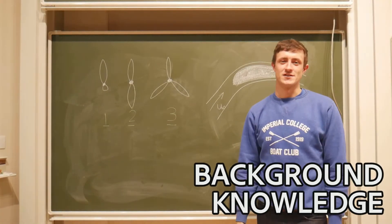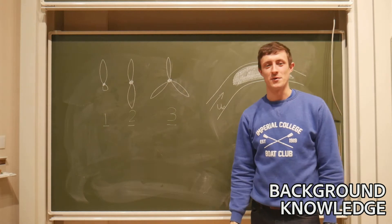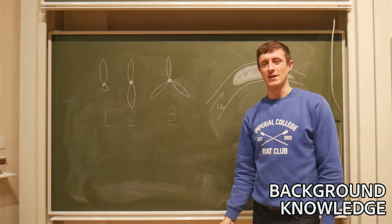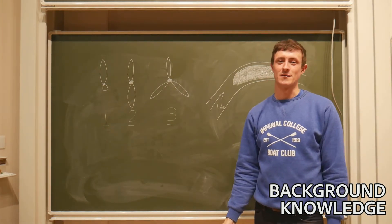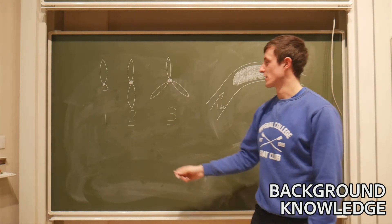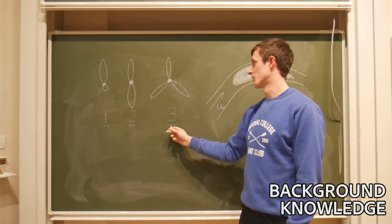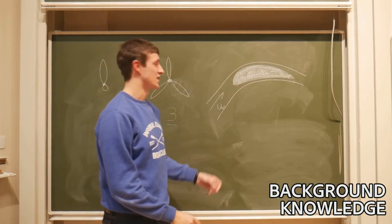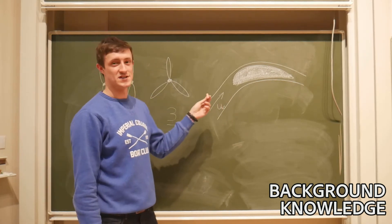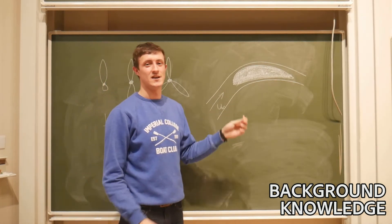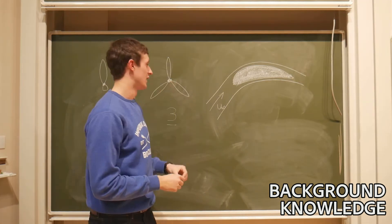A wind turbine is a structure that's used to extract rotary motion from the wind. Most commonly this is through a bladed horizontal axis wind turbine. They often look like this with one blade, two blades, or three blades. This here is a 2D representation of each of these blades, which is then taken and extruded and then twisted to form the blades.